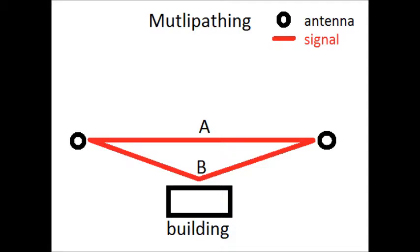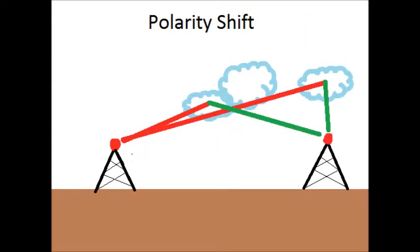And in urban environments, this is a really big issue that people have. And most people just don't realize it's happening. The last thing I'm going to cover is polarity shift. Polarity shift is kind of an issue with long distance communication. When your signal passes through clouds or absorbent objects, it can actually cause the polarity of your signal to shift.